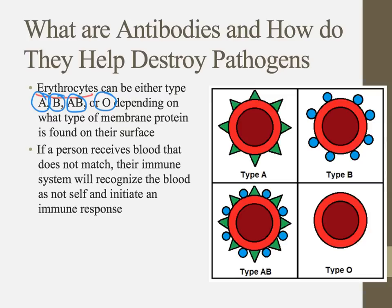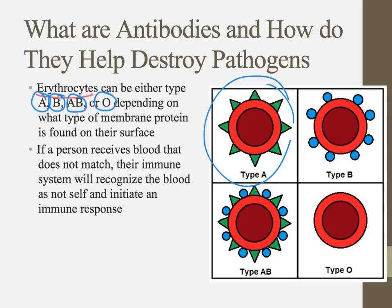If you have type A blood and receive blood from a type B person, those membrane proteins don't match and your immune system will initiate a response to kill off those cells. You want blood that is the same type, or type O blood, which has no membrane proteins — your immune system won't even know it's there. We need blood with the same pattern of membrane proteins so the immune system knows it belongs.